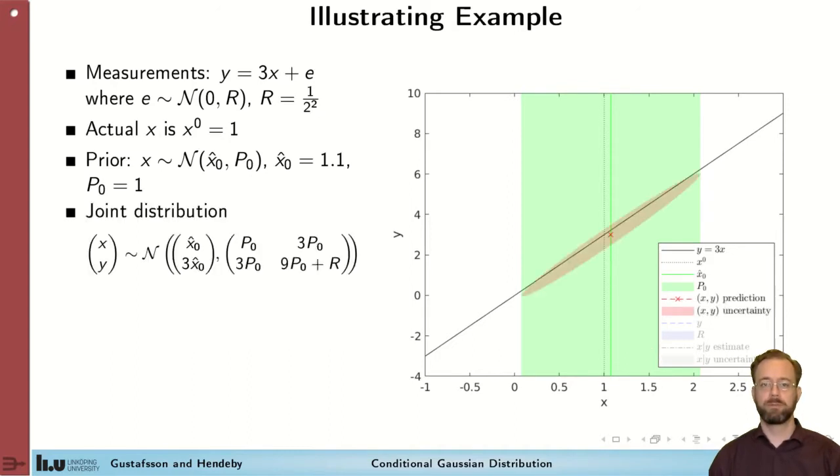We can now, based on this, compute the joint distribution of X and Y. Get this form. And that is illustrated by this red ellipsoid.